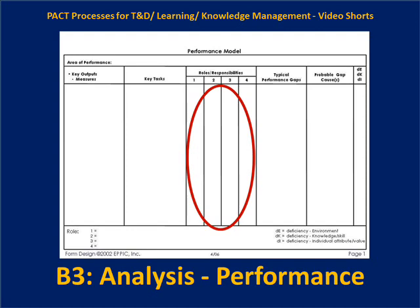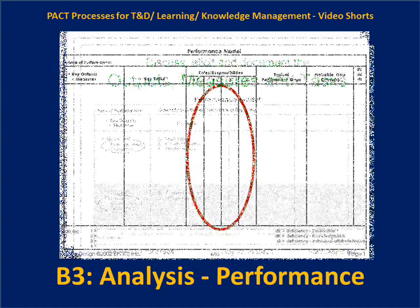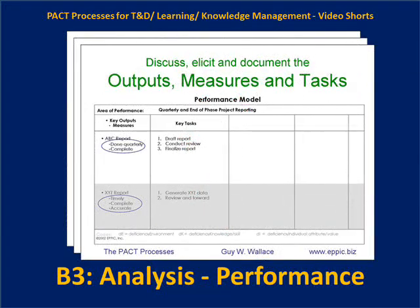Where there are more than one performer in this area of performance, we might articulate various roles and responsibilities. There might be the manager, supervisor, individual contributor, and somebody from another organization involved in a cross-functional process. We can use the four columns in this chart — or more, or no columns if it's not needed. We can articulate who's doing what tasks — who's involved — using checks or X's to say which roles are involved in a given task.